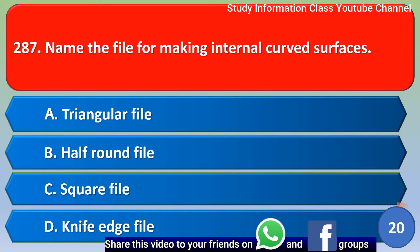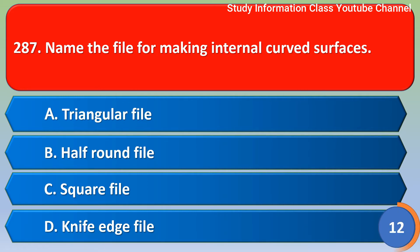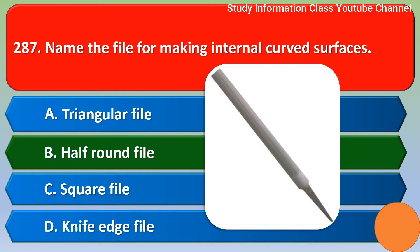Name the file for making internal curved surfaces: Option A, triangular file; Option B, half-round file; Option C, square file; Option D, knife edge file. The right answer is Option B, half-round file.